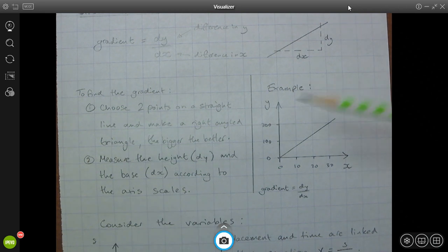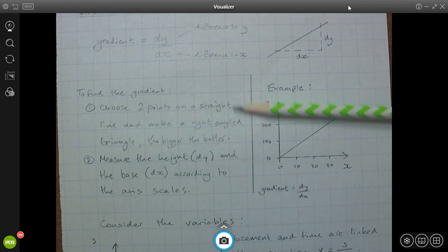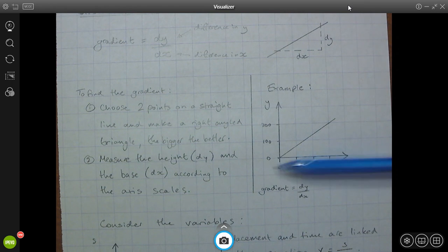So to find the gradient, first choose two points in a straight line and make a right-angled triangle. The bigger, the better. So here's an example of a graph where I've got an x and a y. I haven't used any variables, we're just doing numbers for now, similar to what you were doing in maths lessons.